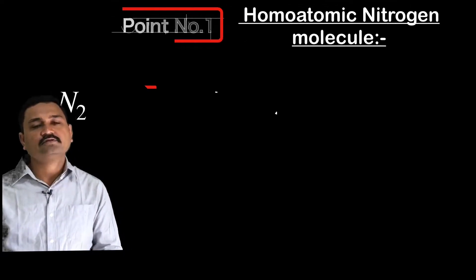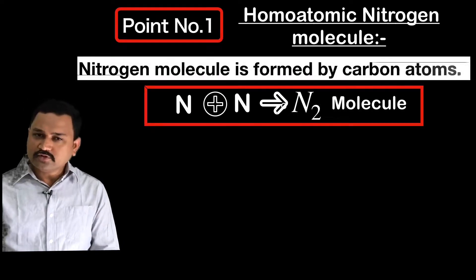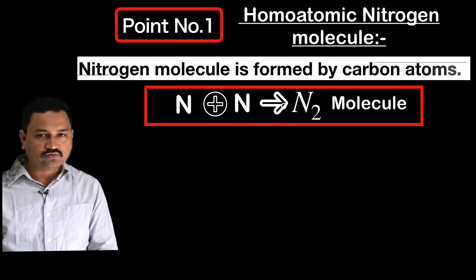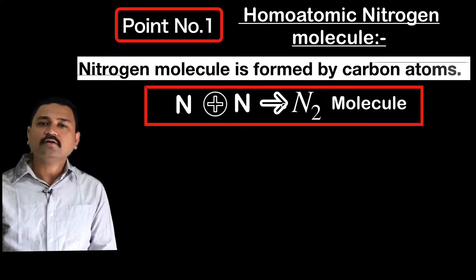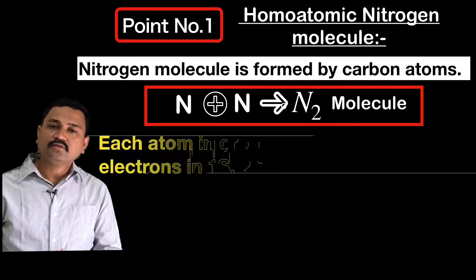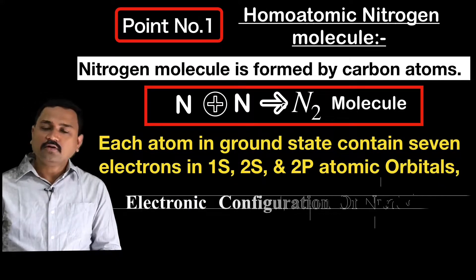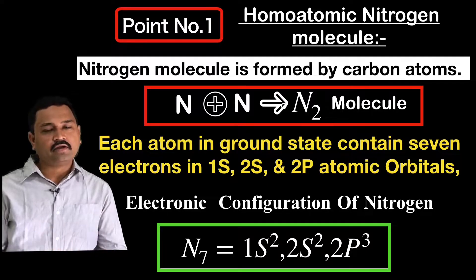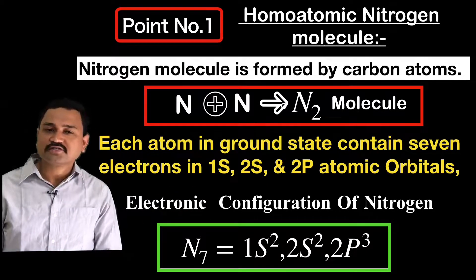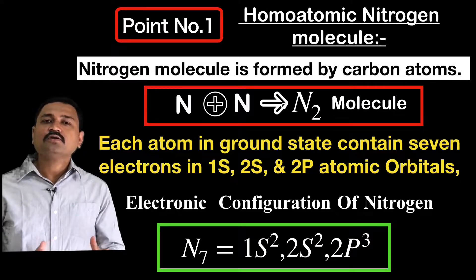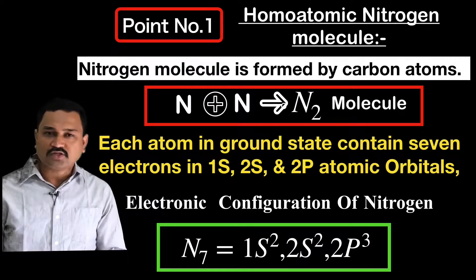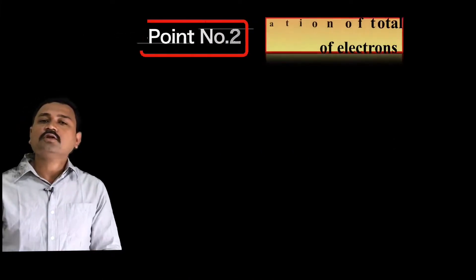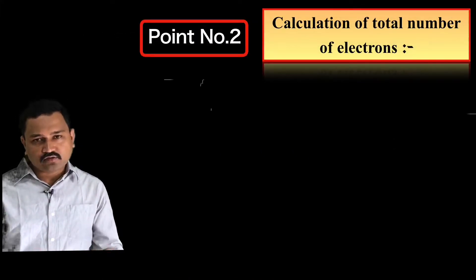Point number one: the nitrogen molecule. We know that the nitrogen molecule is formed by two nitrogen atoms, and each nitrogen atom in the ground state has seven electrons. The electronic configuration for the nitrogen atom — atomic number seven — is 1s², 2s², and 2p³.